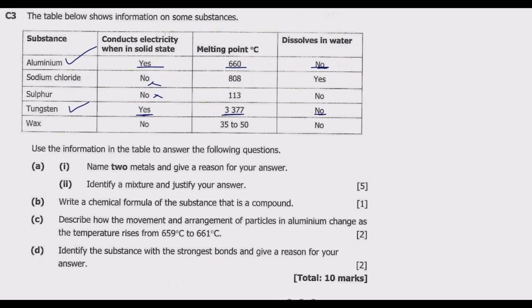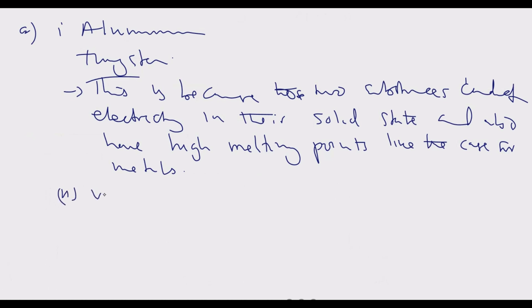Hence a substance which is a mixture will not have a single or an exact melting point. If you look at this, you notice that wax is the only one that has a range of melting point from 35 to 50. If it was a pure substance it would have just an exact melting point. So the distinguishing feature is that mixtures have a range of melting points, while a pure substance will have a sharp or exact melting point.